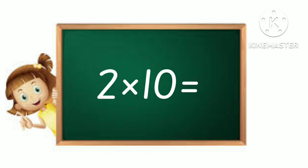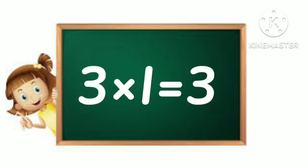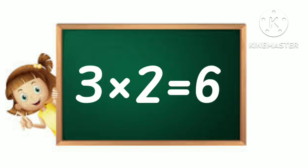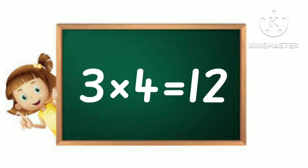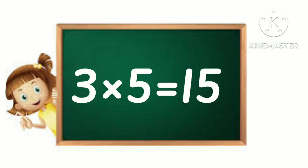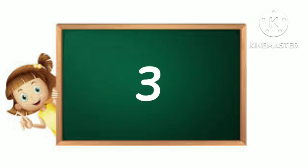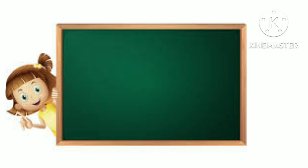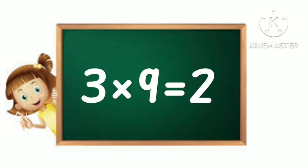2 10's are 20. 3 1's are 3, 3 2's are 6, 3 3's are 9, 3 4's are 12, 3 5's are 15, 3 6's are 18, 3 7's are 21, 3 8's are 24, 3 9's are 27.